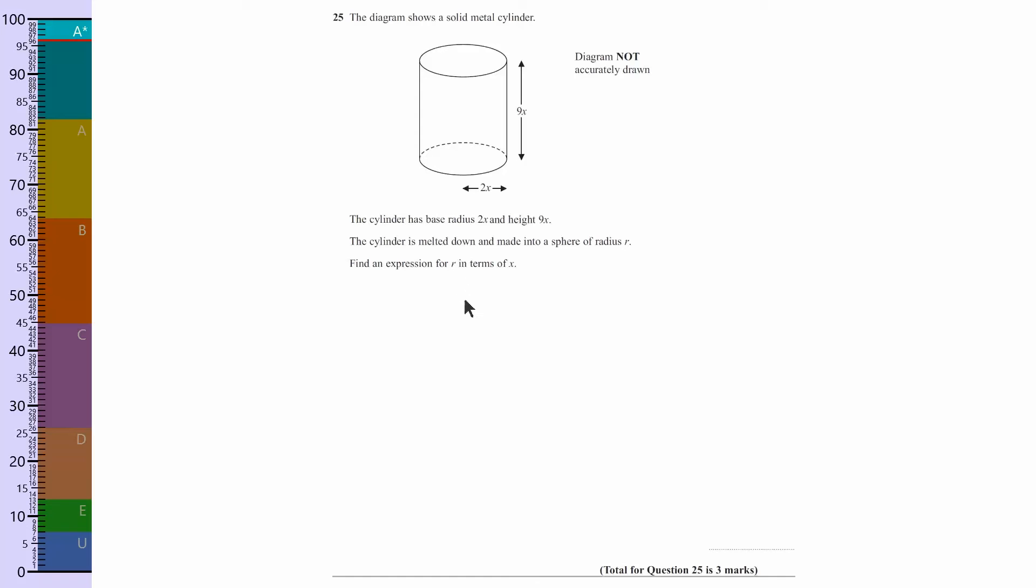The volume of a cylinder is the cross-sectional area times the length. So to find the cross-sectional area, let's write down what we're doing. Volume of cylinder equals pi r squared, and r is 2x, so 2x squared.